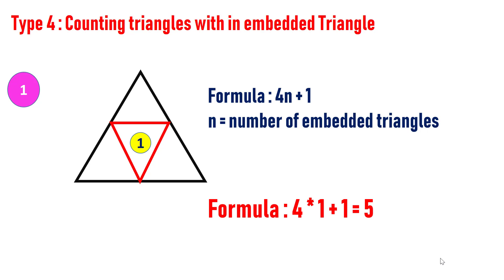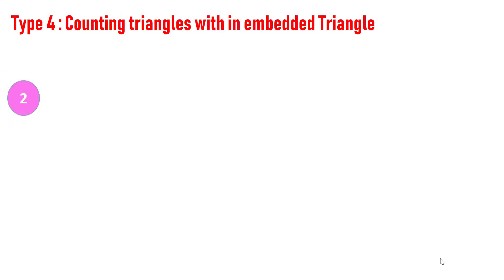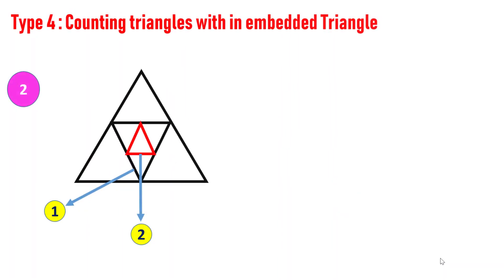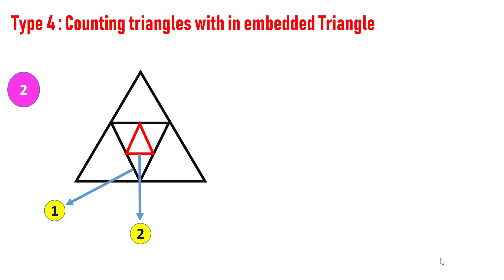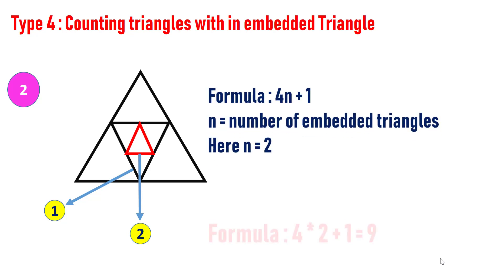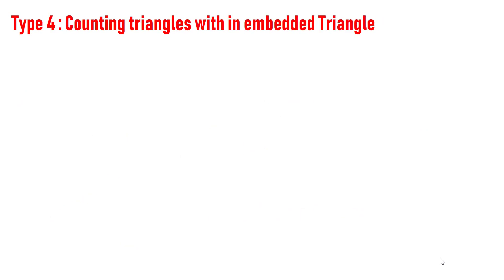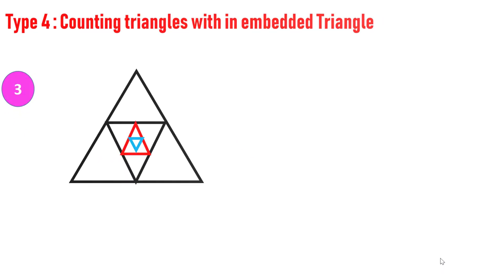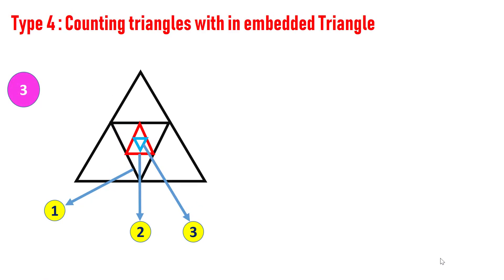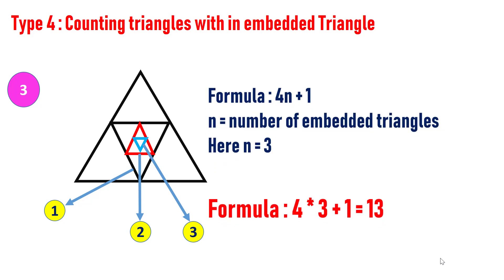Let's check the trick with a more complex figure. Here the number of embedded triangles is two, so number of triangles is four into two plus one, which equals nine. In another figure with three embedded triangles, number of triangles is four into three plus one, which is 13. When you find these kind of patterns, just replace n with the number of embedded triangles to get the total.